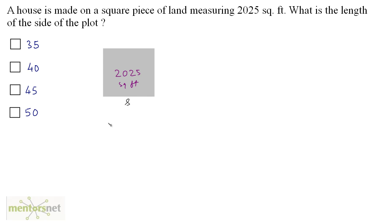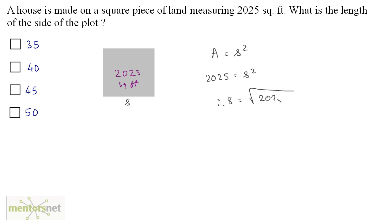Let the side be s. Now, what is the formula for calculating the area of a square? Area of a square is equal to side squared. So area 2025 is equal to side squared. Therefore, the length of the side will be equal to the square root of 2025. The square root of 2025 is 45.